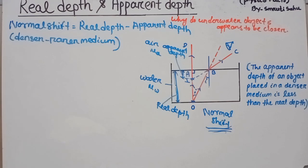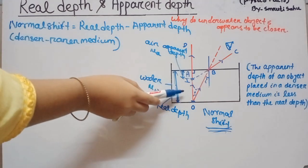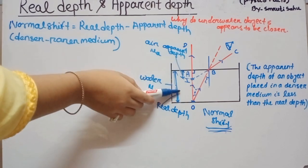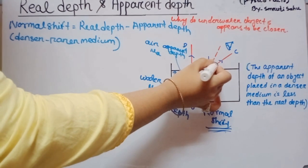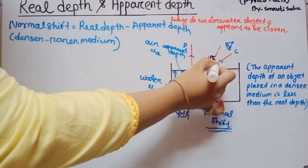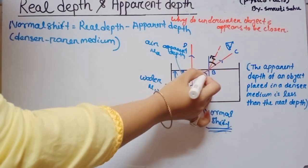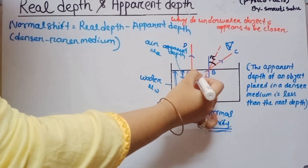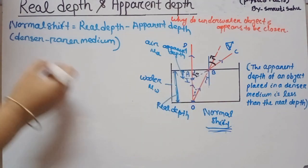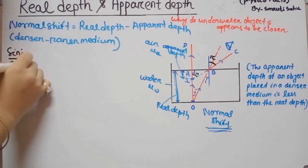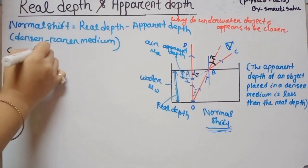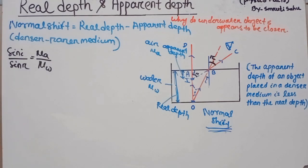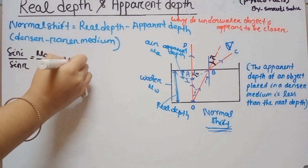Now we determine another formula for the refractive index of two media using real depth and apparent depth. Using Snell's law: sine I by sine R equals mu A by mu W, which is represented as mu AW — the refractive index of air medium with respect to water.